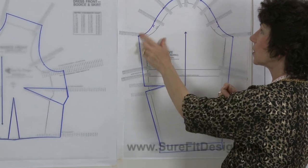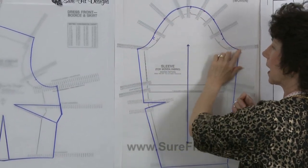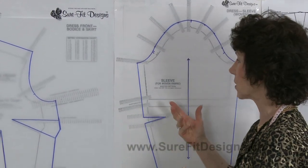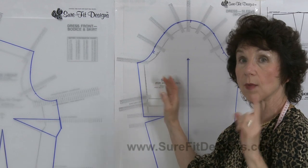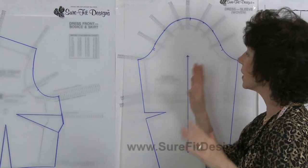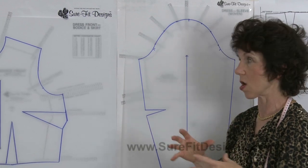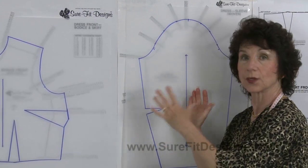When you go to draw the sleeve off, you will also be using your 40 dot. This is a stripped down pattern meaning it doesn't have any seam allowances on it, and at this point I'm not going to add the seam allowances because if you know that you have a large upper arm, this is a good place without the seam allowances to check the width of the arm.